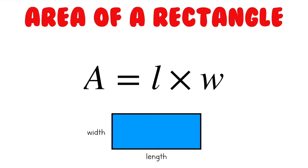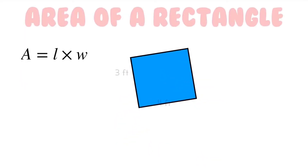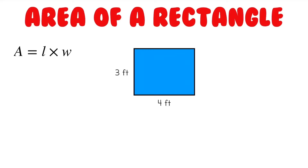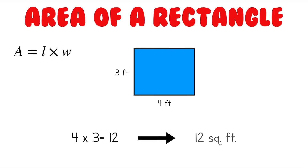Now that I've shown you the formula to find the area of a rectangle, let's try to find the area of one together. Let's take a look at this rectangle right here. It has a length of 4 feet and a width of 3 feet. So using our formula, we just need to do 4 times 3, which is 12. And we can't forget — when finding the area of shapes, we always need to label our answer with the proper units. Since this rectangle's side lengths were given to us in feet, our area will be in square feet. So our final answer is 12 square feet.